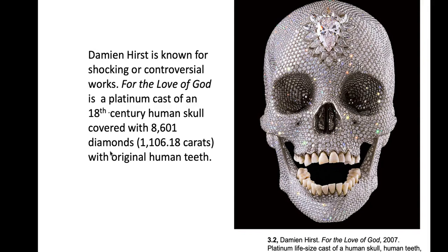This is a contemporary work from 2007 by an artist named Damien Hirst. Damien Hirst often likes to shock viewers, and this is a shocking work in part because of the materials used. This is a cast made out of platinum — a very expensive metal — from an actual human skull from the 18th century. Real human teeth are used, and then over 8,000 diamonds are attached and cover this cast of a human skull.